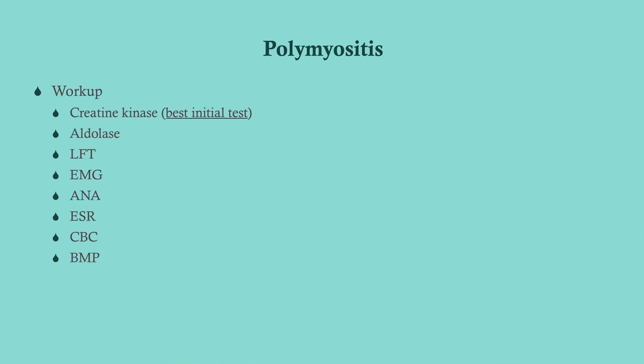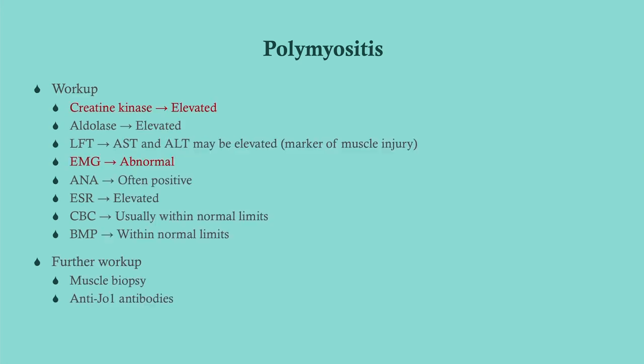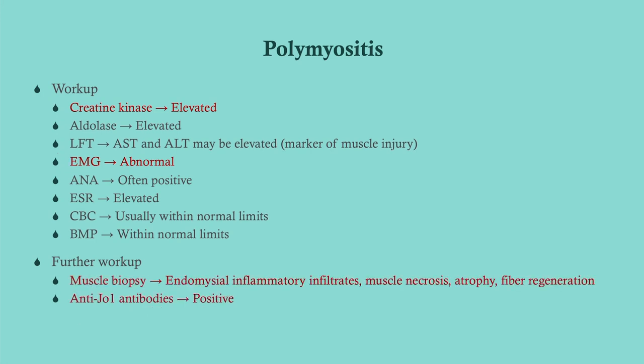For workup: get creatine kinase and aldolase, get LFTs — because AST and ALT are also markers for muscle damage, not just liver enzymes. Get an EMG, and do a subtle workup for other autoimmune disorders including ANA. Sed rate, CBC, and BMP can be helpful. You can also get anti-Jo-1 antibodies — well recognized but sometimes not listed as an option on CCS. Creatine kinase and aldolase will be elevated, EMG will be abnormal, and you'll get your diagnosis via muscle biopsy.